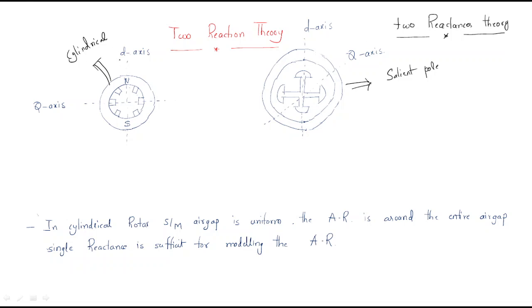For cylindrical construction, we have only one reactance. In a cylindrical rotor synchronous machine, the air gap is uniform — everywhere the air gap is the same. So the armature reaction around the entire air gap is represented by a single reactance, which is sufficient for modeling the armature reaction. This single reactance opposes the flux.